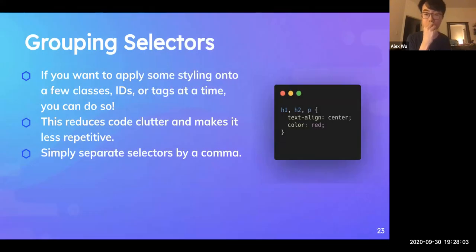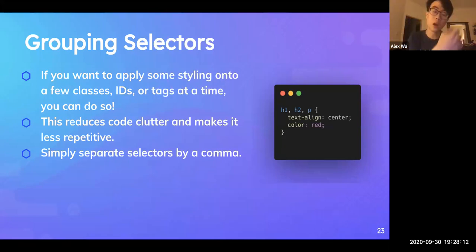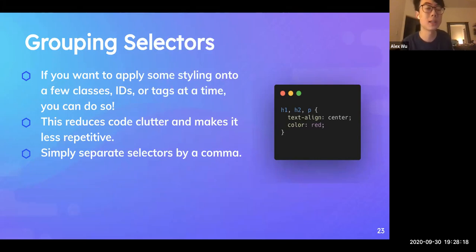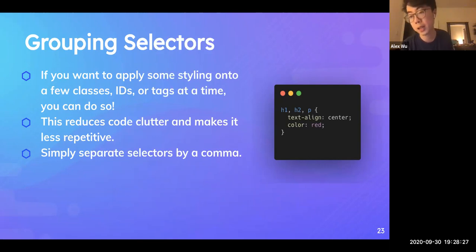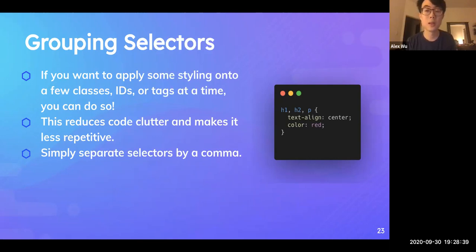This is called the grouping selector. The universal selector selects everything at once. However, if we only want to select some elements but not others, we list them separated by commas. For example, to give H1, H2, and P the same styles, we can group them as 'h1, h2, p' and put the CSS content in the bracket. This reduces code repetition and makes it less repetitive.